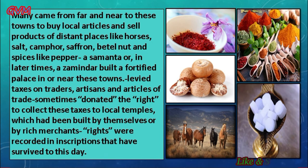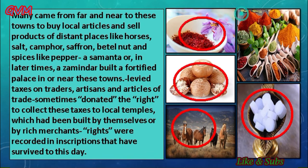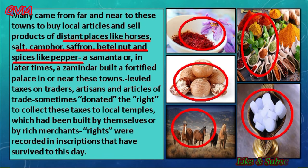These mandapikas and haats were places where villagers came to sell their agricultural produce, horses, salt, camphor, saffron, betel nut, and spices like pepper. As these markets grew, the samantas — the zamindars or landlords — started to build forts around these large villages and turn them into developing towns.